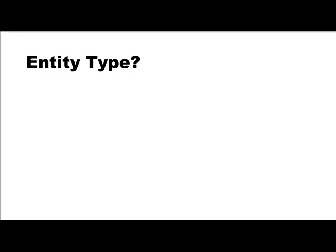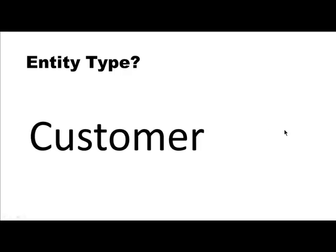Let's do some examples. For each of the following things, think about whether it represents an entity type or an entity instance. Apply the rules: it's a singular noun, it's a category, it has attributes, and it could potentially have instances. 'Customer' — is this an entity type? Is it a category? Yes. Can it have instances? Yes: customer A, customer B, customer C. Can it have attributes? Yes: customer ID, name, address, telephone number. It satisfies all of the properties, and therefore customer could potentially be an entity type.